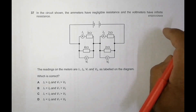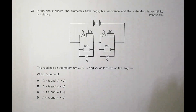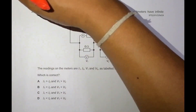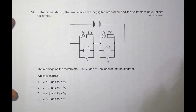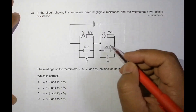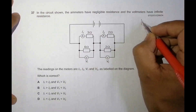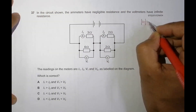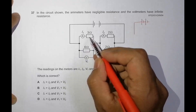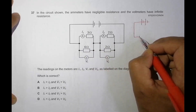We have to choose the correct statement. Let me convert this circuit into a simpler form so that things become a bit easier. The combination of these two resistances gives us a single resistance.